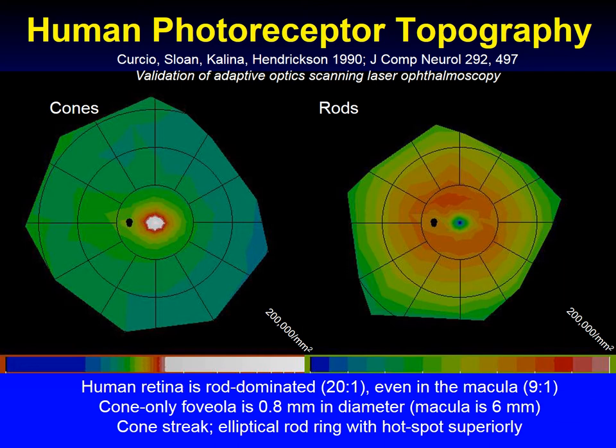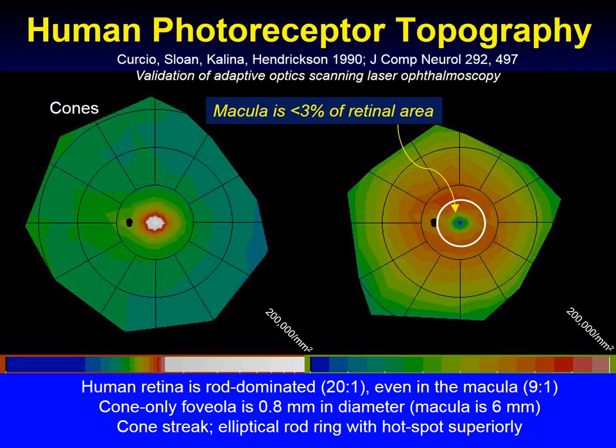The cone-only foveola is 0.8 millimeters in diameter. We found more cones in the nasal retina. Rods were numerous in an elliptical rod ring that swings out around the optic nerve head, with a hot spot in superior retina. Importantly, the 6-millimeter diameter macula is less than 3% of total retinal area, which impacts the design of our experimental studies.